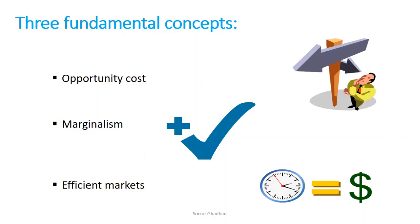The second concept is marginalism. It is the process of analyzing the additional cost or benefit arising from a choice or decision. It means if I want to produce an additional unit, I have to check the additional revenue or additional cost I may incur. Whenever we talk about marginalism, we are talking about what is additional — whether it is revenue or cost.